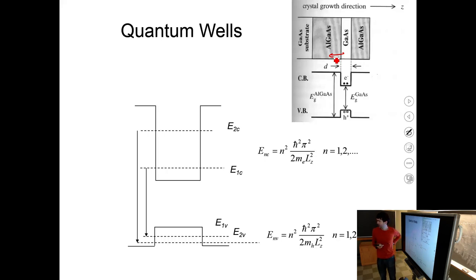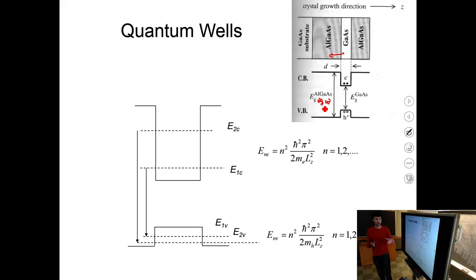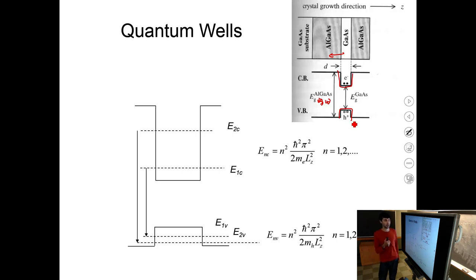The band gap of aluminum gallium arsenide depends on how much aluminum you put in — say 30%, giving Al₀.₃Ga₀.₇As. The band gap of gallium arsenide is smaller. As you substitute galliums with aluminums, the band gap grows, creating a Type I band alignment. This creates a potential trap for both electrons and holes in the middle gallium arsenide layer sandwiched between the higher-energy aluminum gallium arsenide layers. That's a quantum well.